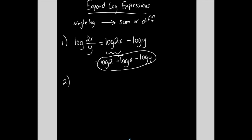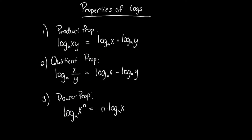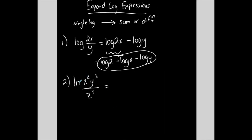Let me do another one: ln of x squared y to the third over z to the fourth. This is the natural log, and the natural log has a base of e. It follows all of these properties the same way. I see the quotient first — that's the big operation. A single log of a quotient separates into a difference of separate logs: the numerator goes first and the denominator goes second.